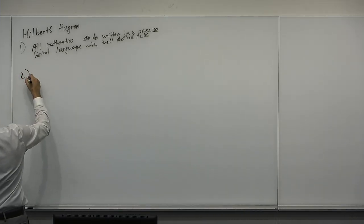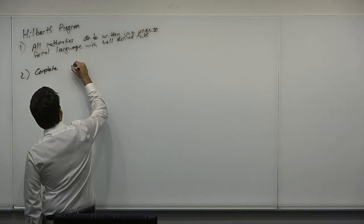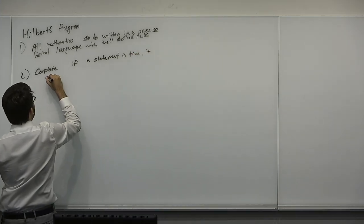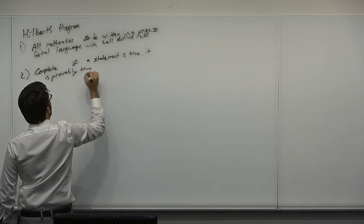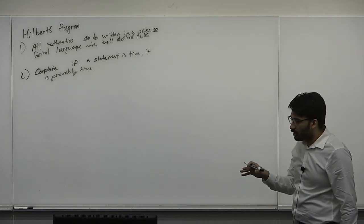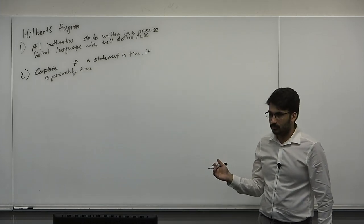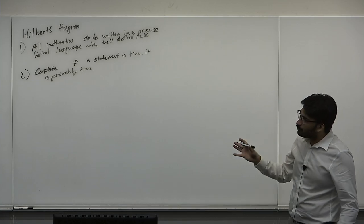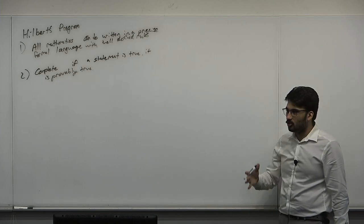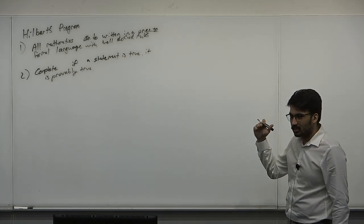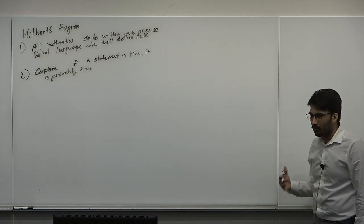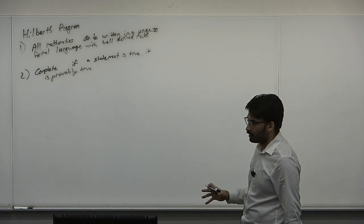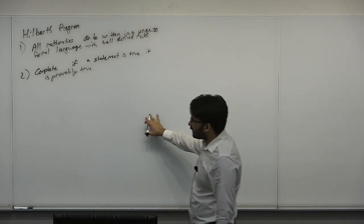Two is called completeness. Basically, all that is true is provable. If a statement is true, it is provably true; if false, there exists a proof that it's false. You don't want a system where you forget some axiom. Like a basis spanning a vector space, you want to make sure there's no missing statement — you want to prove all mathematically true statements, not just a subset.